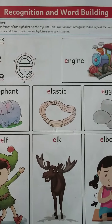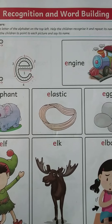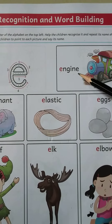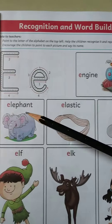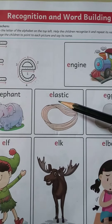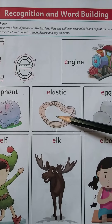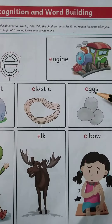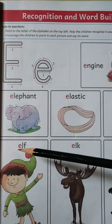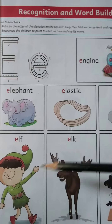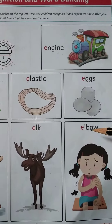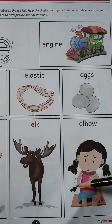Now revise these words with me. E engine, E elephant, E elastic, E eggs, E elf, E elk and E elbow.